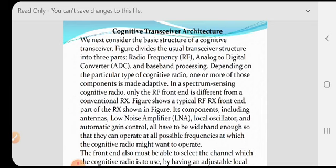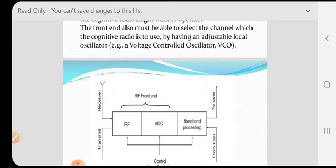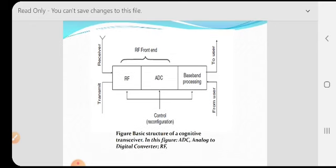The front end also must be able to select the channel which the cognitive radio is to use by having an adjustable local oscillator, that is a voltage controlled oscillator. This is the basic structure of cognitive transceiver. In this figure, analog to digital converter and radio frequency range, baseband signal processing, three units are combined together to make cognitive transceiver architecture. Front end are radio frequency channel and ADC analog to digital converter. And there is baseband processing that controls reconfiguration with the help of RF.